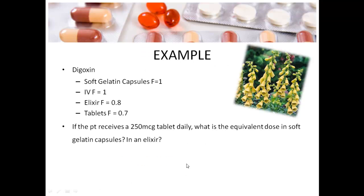Let's use an example. Digoxin has a bioavailability of 1 when it comes in the form of soft gelatin capsules and as an IV. In the elixir form it has a bioavailability of 0.8, and in tablets it has a bioavailability of 0.7. If a patient receives 250 microgram tablets daily, what is the equivalent dose in soft gelatin capsules, and what is the equivalent dose in elixir?